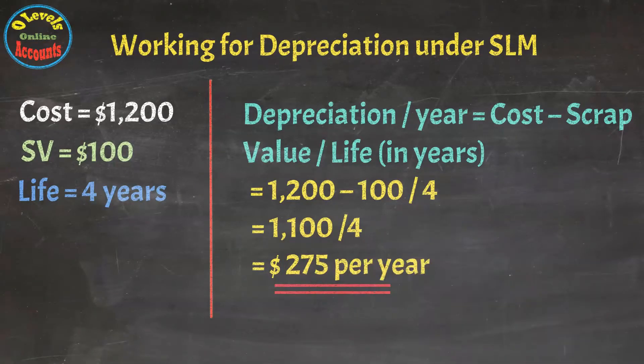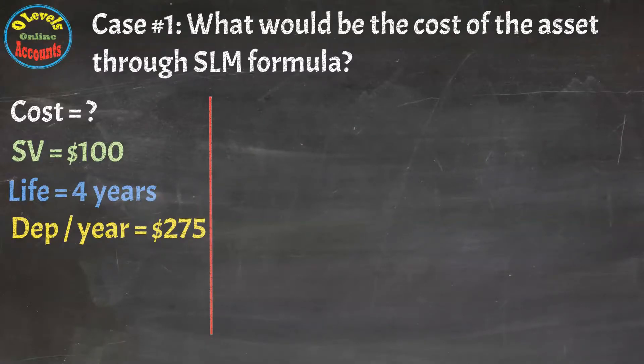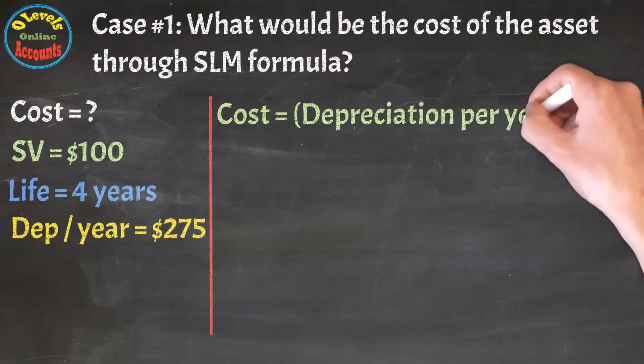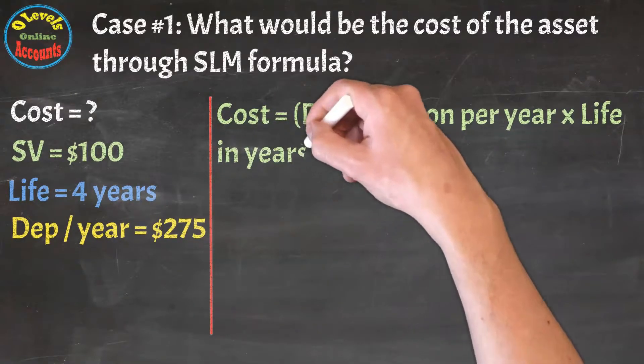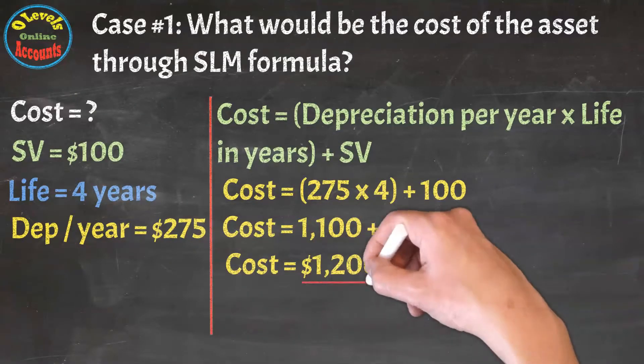Let's see some cases to calculate different variables in the formula. In case number one, we have to find out the cost of the asset through given data. In this case, we will change the formula settings to calculate the cost of the asset. The new shape would be cost equals depreciation multiply by life and add with scrap value. By putting all corresponding values, we will get the cost of the asset is $1200.